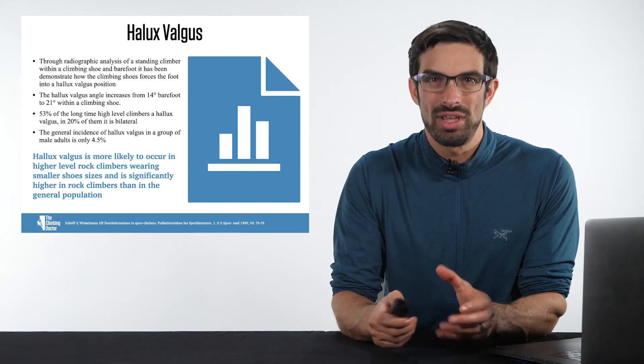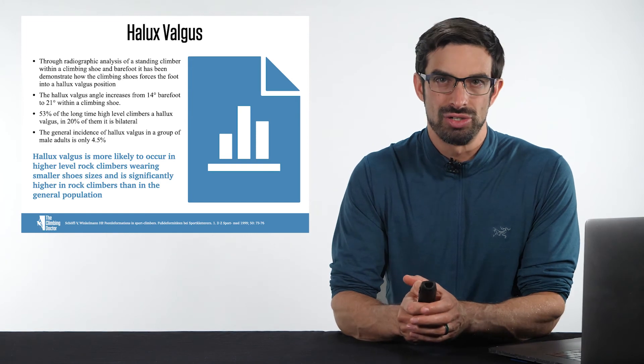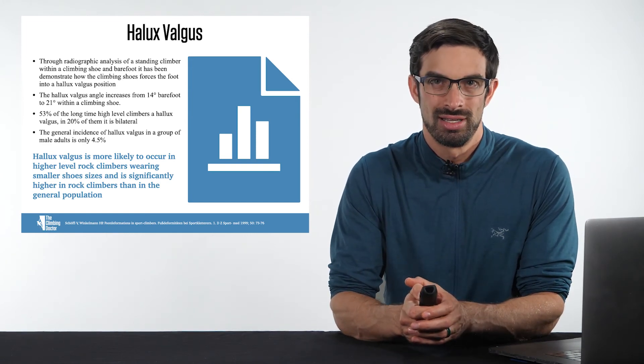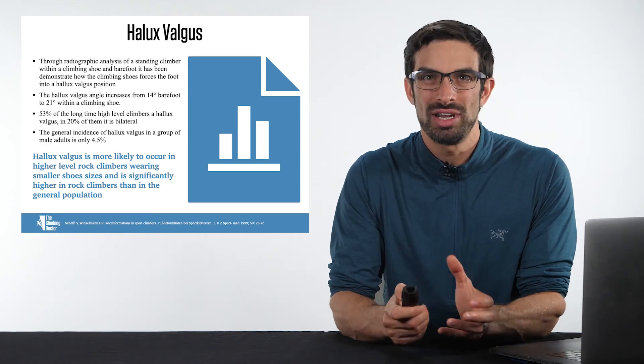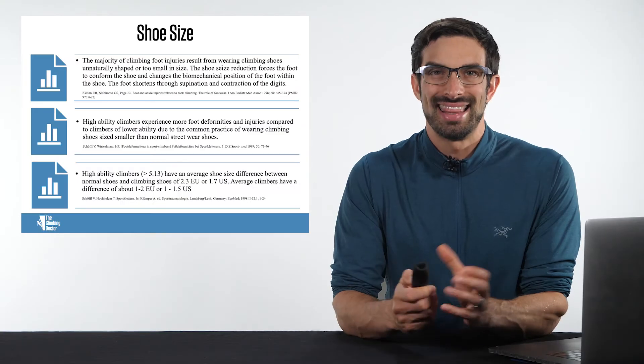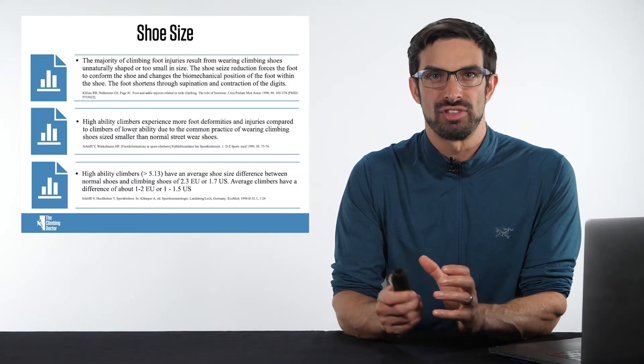We understand that small, tight-fitting climbing shoes generate pain and can cause deformity in the toes. But how small is too small? In another study by Schoffel, they identified that high-ability climbers had an average shoe size difference between normal shoes and climbing shoes of 2.3 EU or 1.7 US. Average climbers had a difference of about 1 to 2 EU or 1 to 1.5 US. These sizes were based on manufacturer sizing.